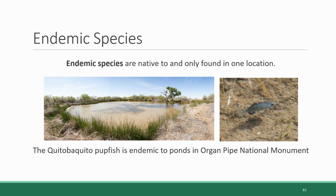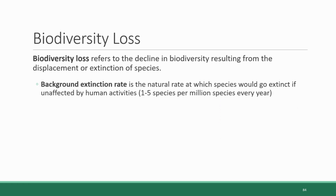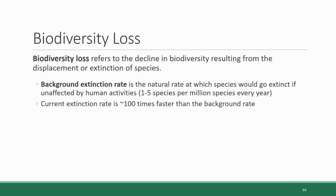This transitions us nicely into the next topic: biodiversity loss. The Earth is experiencing a loss in biodiversity. Biodiversity loss is the term used to describe a decline in biodiversity resulting from the displacement or extinction of species. Some level of biodiversity loss happens all the time — it's inevitable. The background extinction rate is the term used to describe the natural rate at which species go extinct without the influence of human activity. We know what a normal background extinction rate is by looking at the fossil record, which tells us how many species disappear over a particular period of time. That rate is about one to five species per million species on Earth every year. However, the current extinction rate is about 100 times faster than the background rate, meaning that during the lifespan of the average person in the U.S., 23,000 species will go extinct.